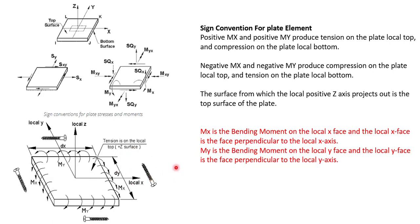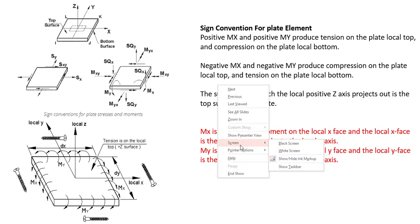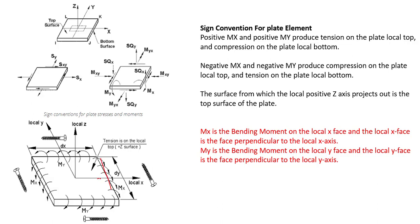This is the sign convention for plate bending. Mx is the bending moment on the local x-face, and the local x-face is the face perpendicular to the local x-axis. In the same manner for My, My is the bending moment on the local y-face, which is the face perpendicular to the local y-axis. You can observe the moments from the diagram for the local axis — Mx for the local x-axis and My for the local y-axis. I hope this is helpful for interpreting the results.